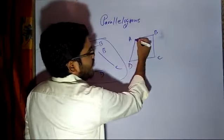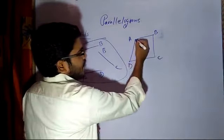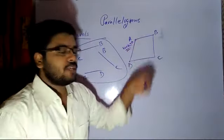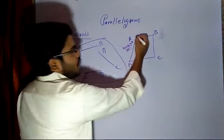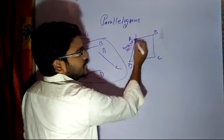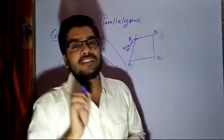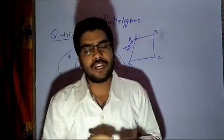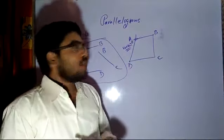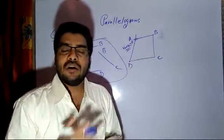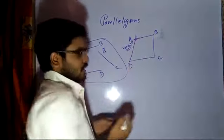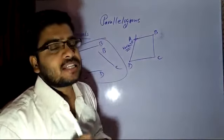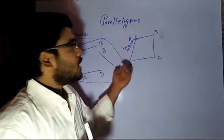Now, what is the meaning of vertex? I have been pointing to it with my marker. This point is called a vertex. The definition: two line segments intersecting at one point — that point is said to be the vertex of the plane figure. Since we are talking about a quadrilateral, it will be called the vertex of a quadrilateral. If we talk about parallelograms, it will be called the vertex of a parallelogram. So, a vertex is a point obtained when two line segments intersect each other.